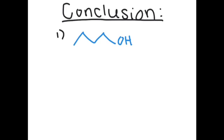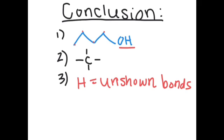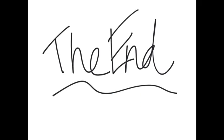In conclusion, to understand skeletal structures better: you can assume carbons at each point unless labeled otherwise; all carbons have four bonds unless charged; and all unshown bonds are to hydrogen. This is why unless an atom is a carbon or hydrogen, it must be labeled. The end, thanks for watching.